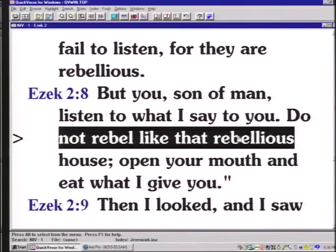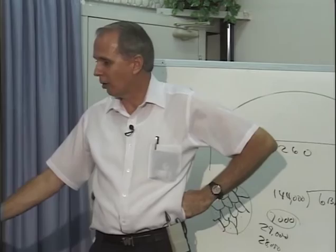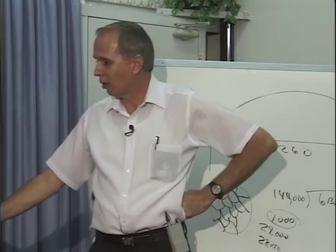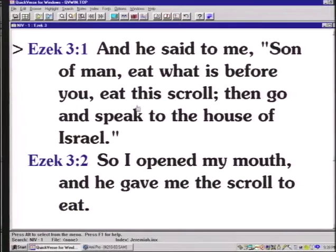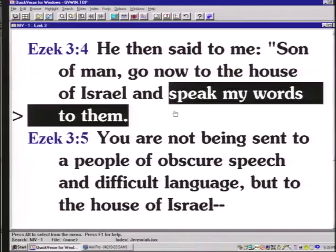But you, son of man, you listen to what I say to you, and do not rebel like that rebellious house. So open your mouth, and you eat what I'm about to give you. The point, you know the rest of the story. He eats the book, and it's sweet as honey in his mouth, and it's bitter in his stomach. And this scroll had writing on both sides, words of lament and mourning and woe. So I opened my mouth, and he gave me the scroll to eat. Then he said to me, Son of man, eat the scroll I'm giving you, and fill your stomach with it. And I ate it, and it was as sweet as honey in my mouth. Son of man, go now to the house of Israel, and do what? Speak my words.